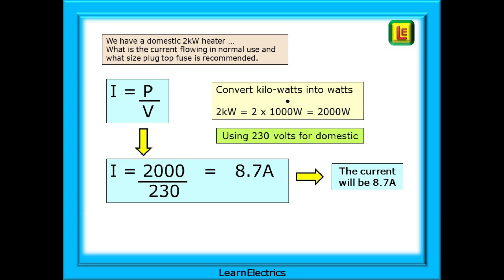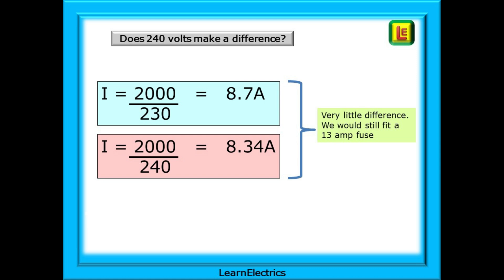We need a fuse that will allow 8.7 amps to flow but not much more. Everybody asks if 240 volts makes a difference to the amps — well yes it does, but only a very small amount and not worth worrying about. Substituting 240 volts into the formula gives us 8.34 amps — almost the same. In this case we would fit a 13 amp fuse for either of these calculations.